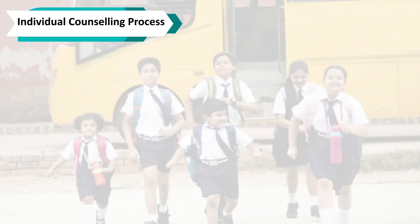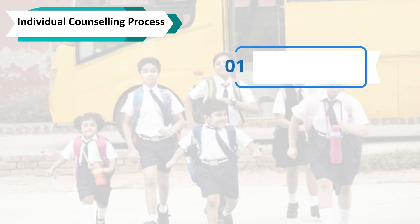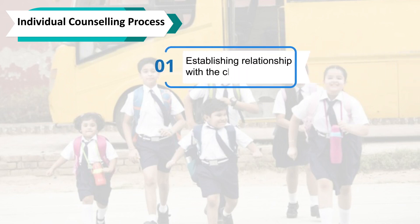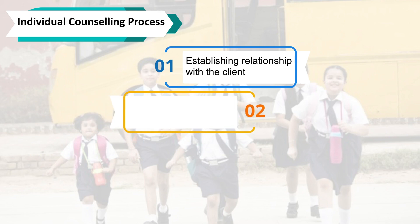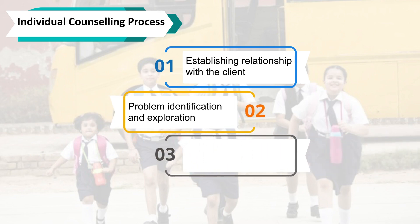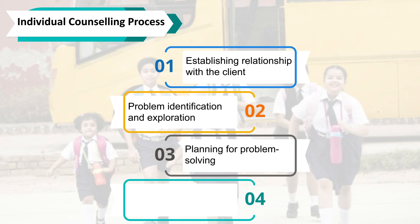The process of individual counseling involves four stages: establishing a relationship with the client, problem identification and exploration, planning for problem solving, and implementation and termination.